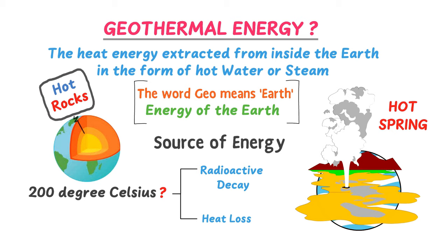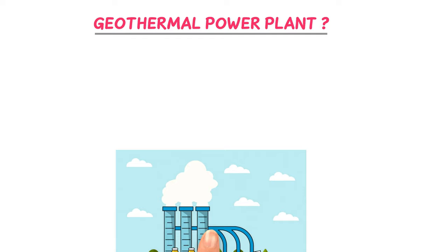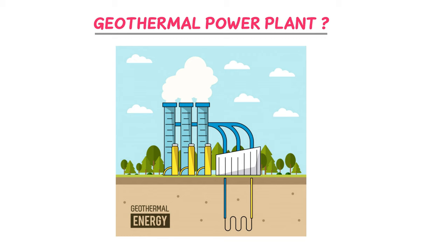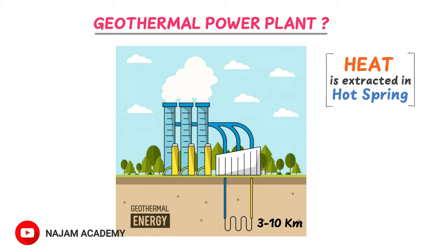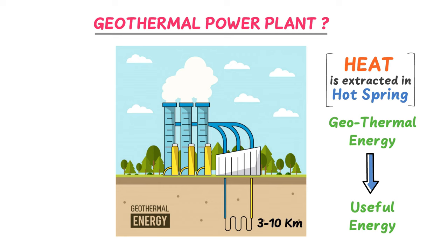Now, how does a geothermal power plant work? Geothermal wells are drilled into the earth's crust at approximately a depth of 3 to 10 kilometers. Heat is then extracted from the earth in the form of hot water or steam, and the geothermal power plant converts this thermal energy into other useful forms of energy.